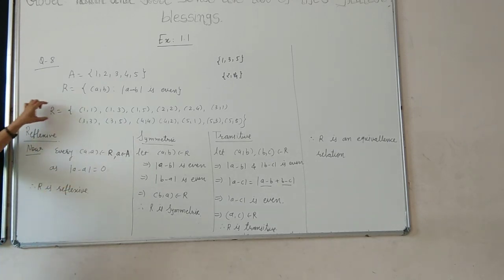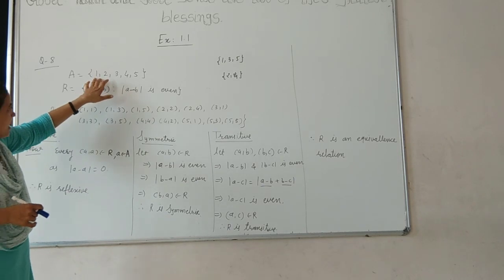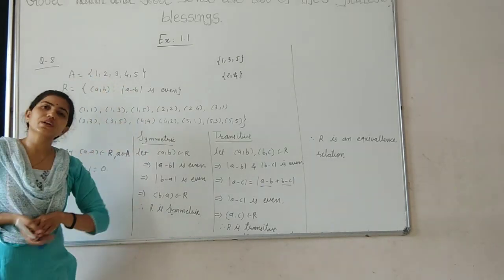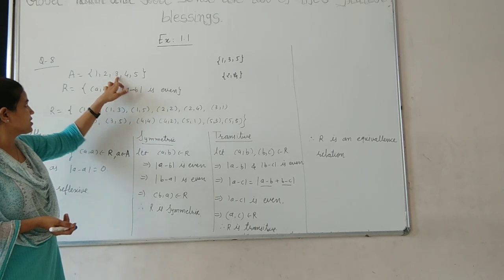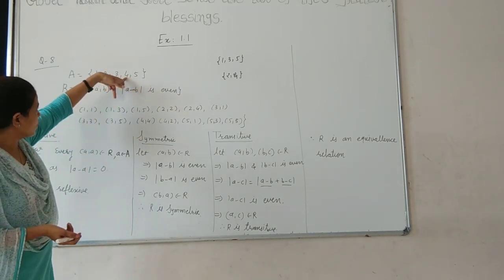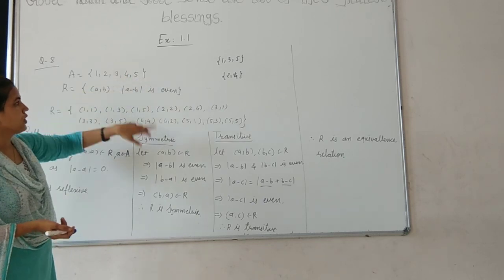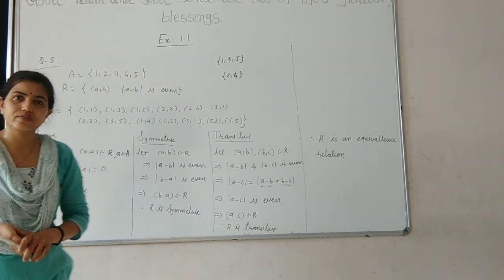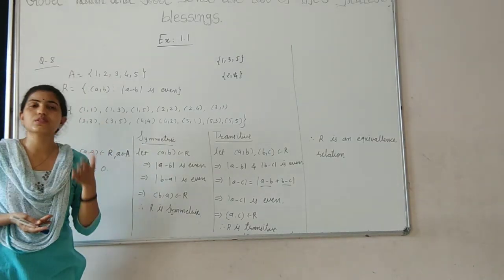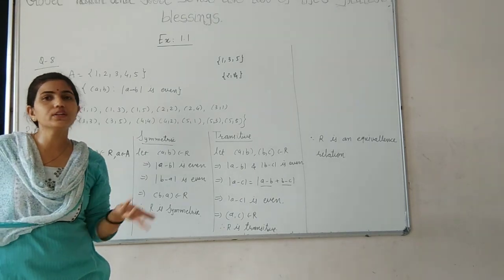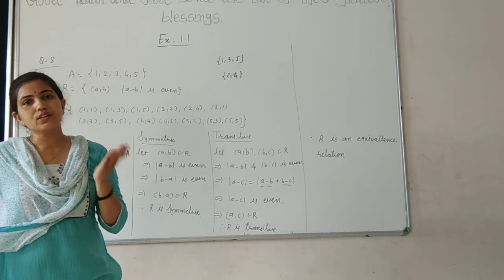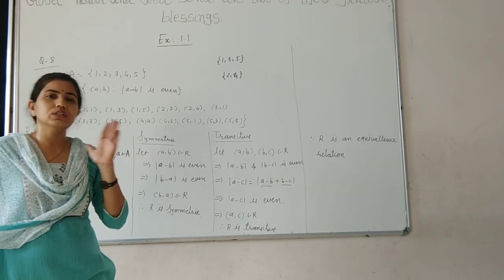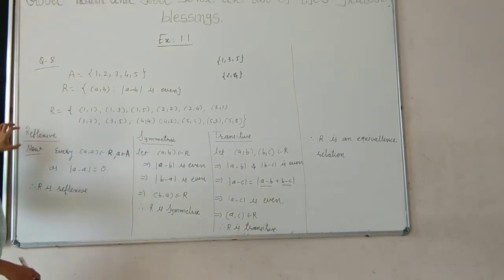Before we go to the second section, we will first show that R is an equivalence relation. When the set has a small number of elements, we can derive the relation R first. So I derive: (1,1), (1,3), (1,5), (2,2), (2,4), (3,1), (3,3), (3,5), (4,4), (4,2), (5,5), (5,3), (5,1). You know that the difference of odd numbers is always even, the difference of even numbers is always even, but the difference of an odd and even number is odd. That is why these pairs form R.